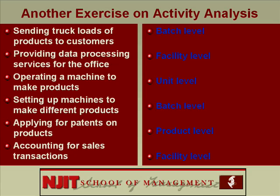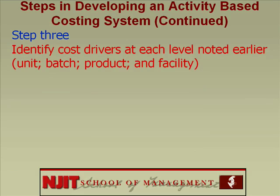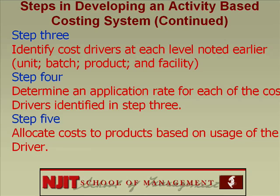Let's continue with the rest of the steps in developing an ABC system. Step 3: identify cost drivers at each level — unit, batch, product, and facility. Step 4: determine an application rate for each of the cost drivers identified in step 3. Step 5: allocate costs to products based on usage of the cost driver.